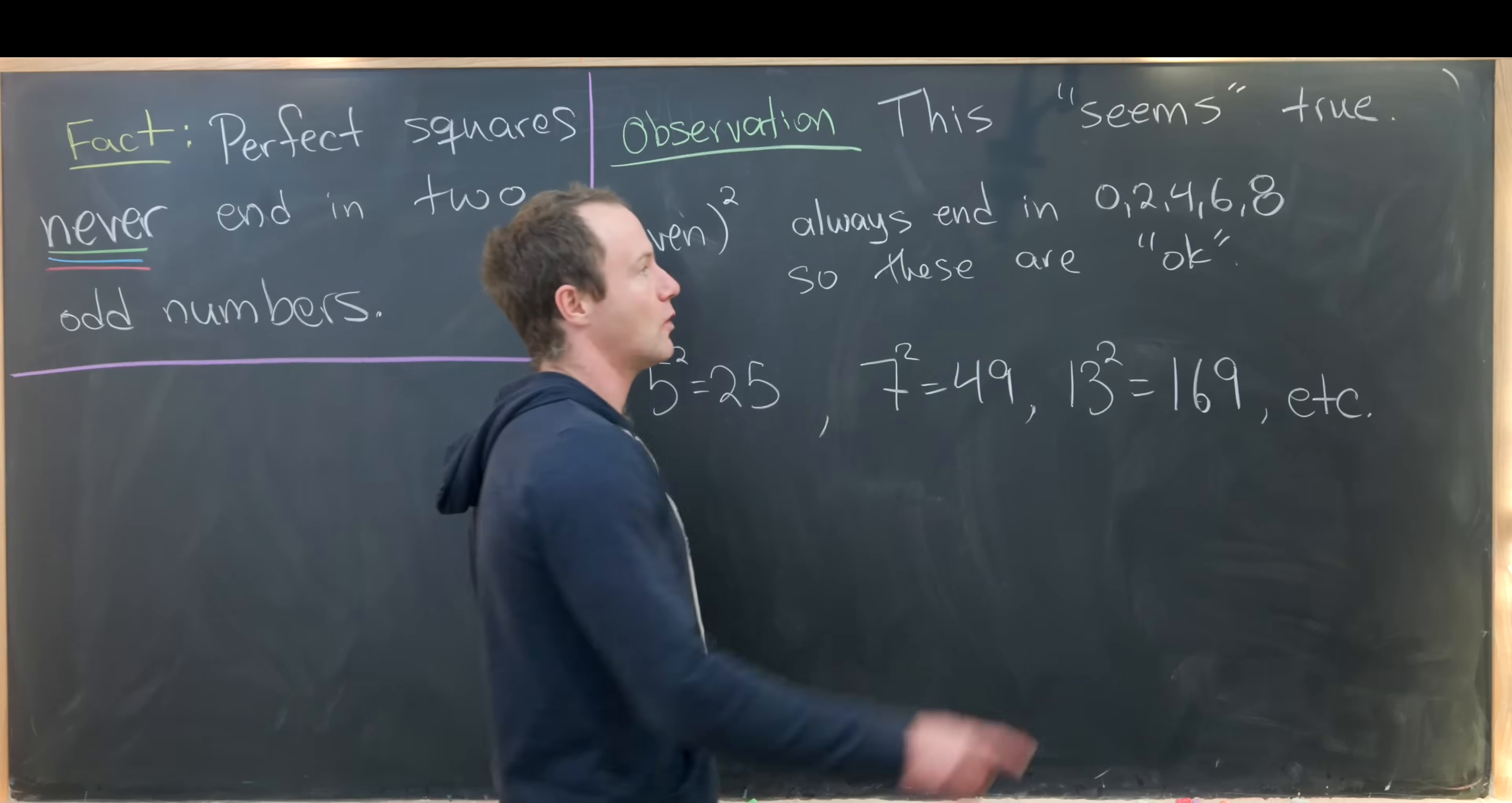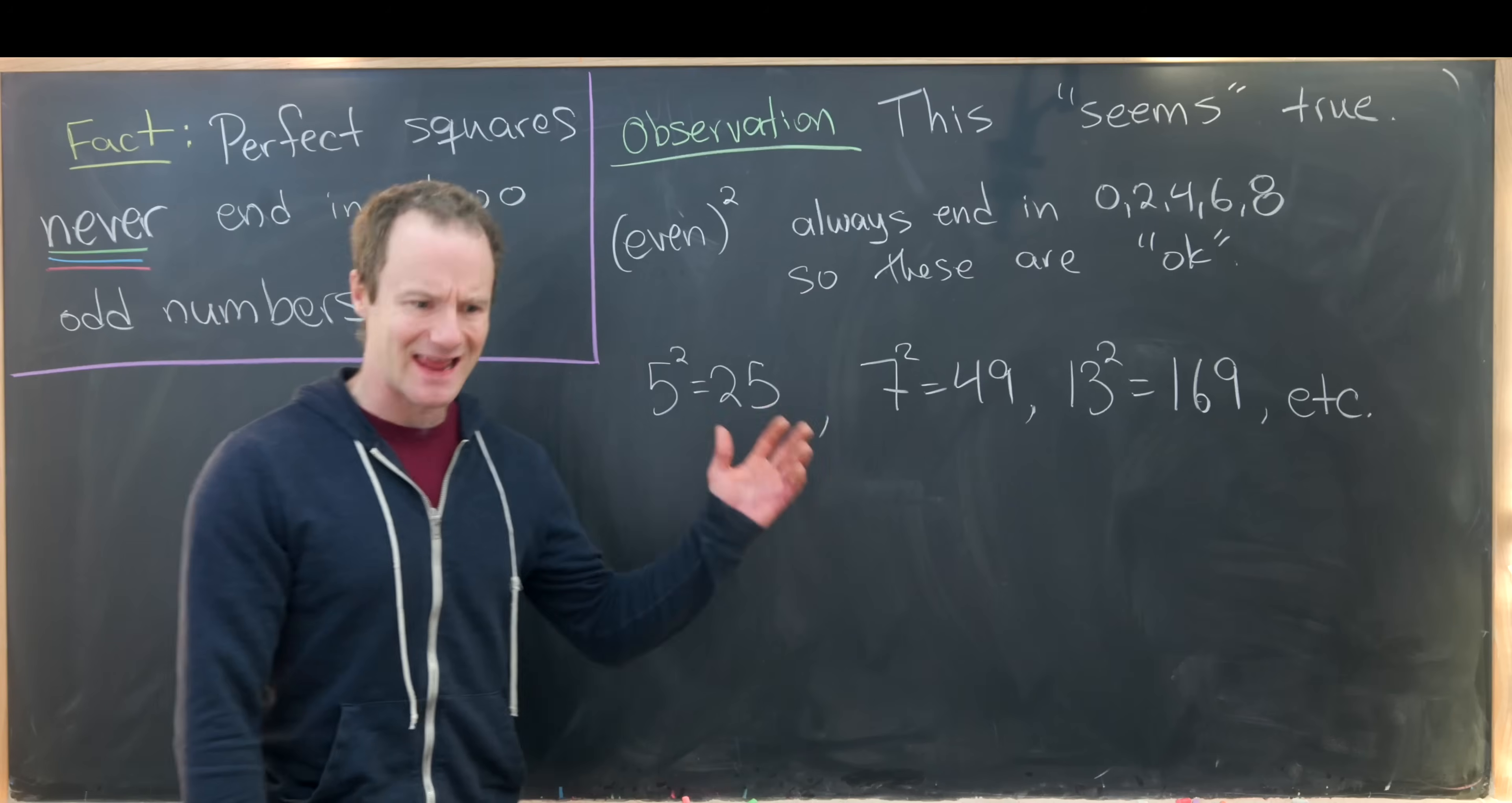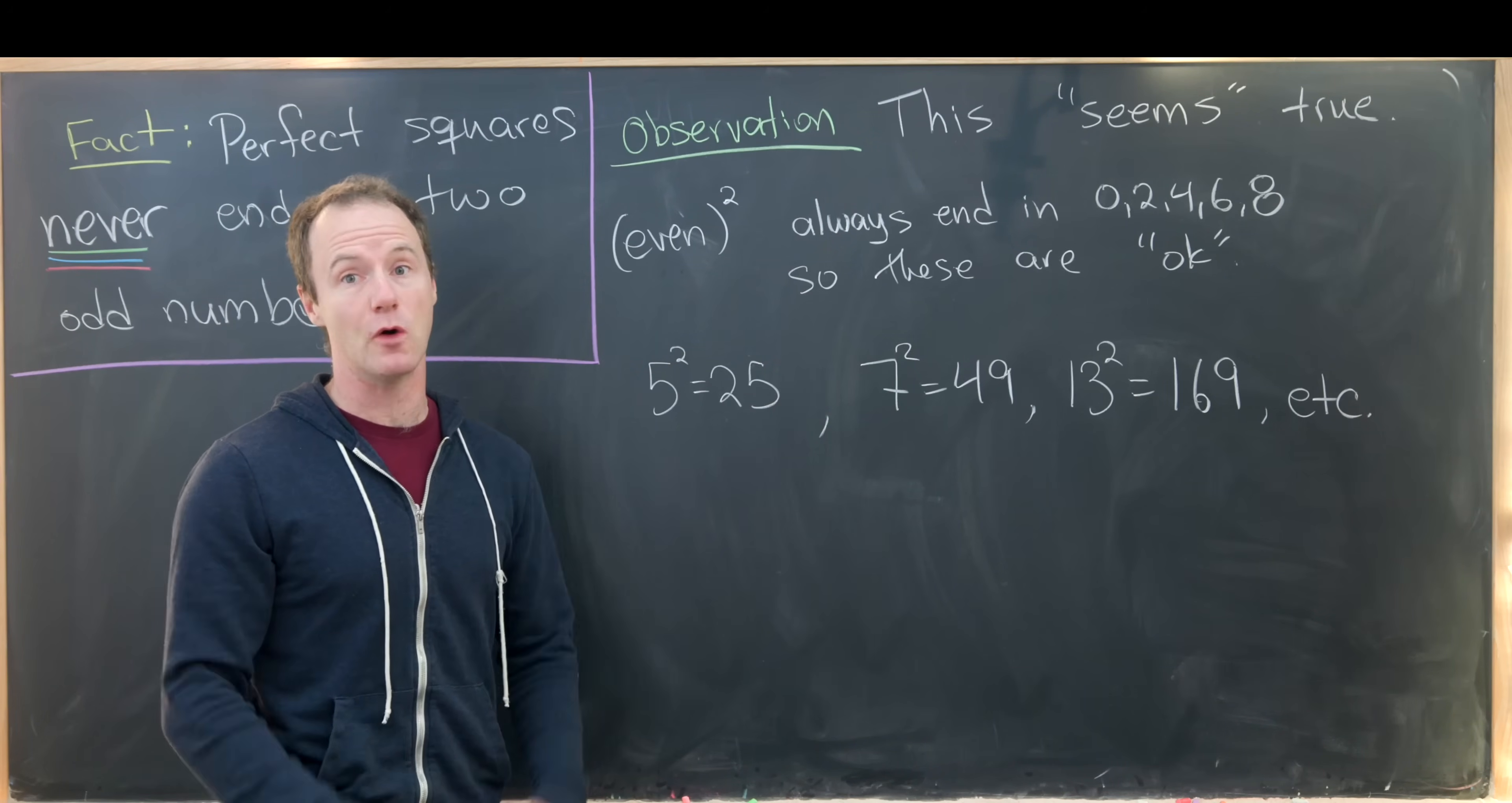And things that are even always end in zero, two, four, six, or eight. But if they end in an even number, that means the last two digits cannot both be odd.